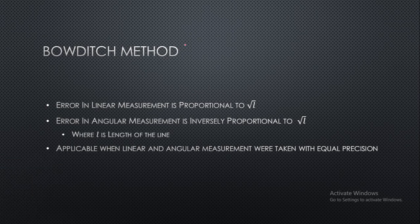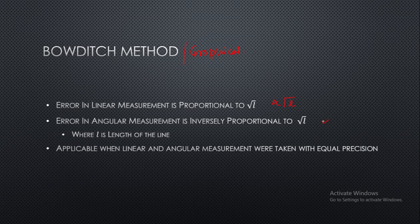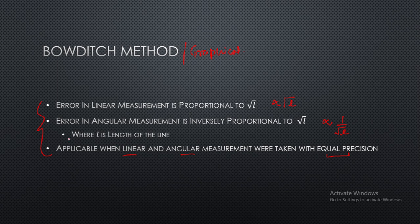Before that, this theory is also applicable for graphical method. Error in linear measurement should be proportional to root L. Error in angular measurement should be proportional to 1 by root L. And each angular and linear measurement should be taken with equal precision. These three points we have to consider in mind while applying the graphical method.